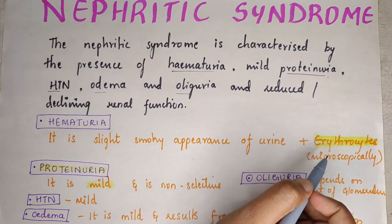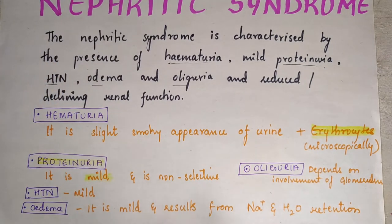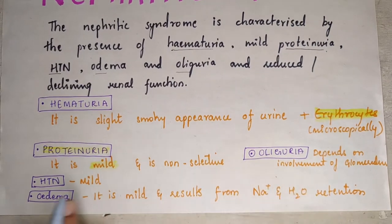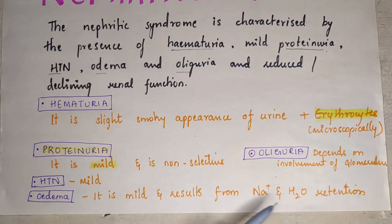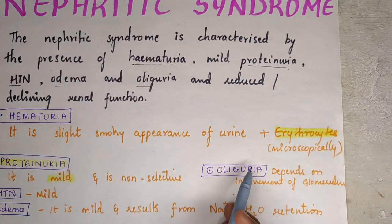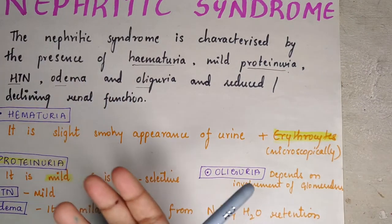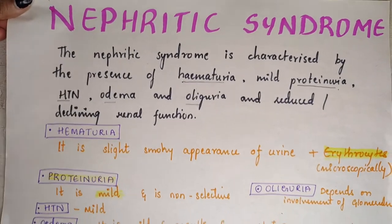In nephritic syndrome, proteinuria is mild and non-selective. Hypertension is also mild. Edema is mild and mainly due to sodium and water retention. Oliguria depends upon the extent of glomerular involvement — how much inflammation has taken place determines the degree of oliguria in nephritic syndrome.